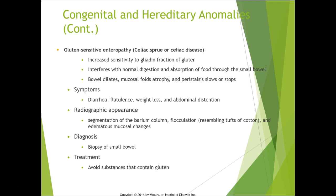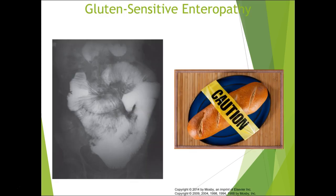Celiac sprue or celiac disease is increased sensitivity to the gliadin fraction of gluten, which interferes with normal digestion and absorption through the small bowel. The bowel dilates, mucosal folds atrophy, and peristalsis slows or stops. Symptoms are diarrhea, gas, weight loss, and abdominal distension. Radiographic appearance is segmentation of barium with a cotton ball or fluffy mucosal appearance. Small bowel biopsy confirms the diagnosis; treatment is avoiding gluten.